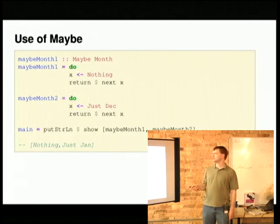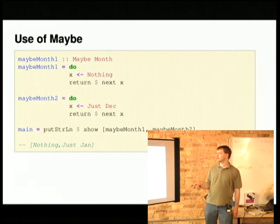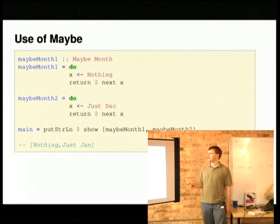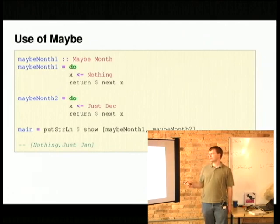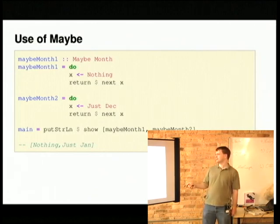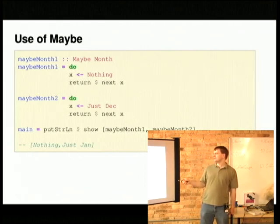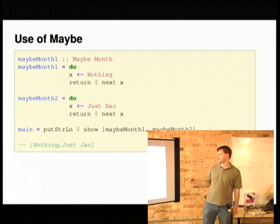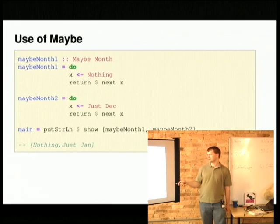So how this works, using that month type class I defined before. If I give it a nothing value and return the month that comes after nothing, then I get nothing in my output. Whereas if I say that my maybe month is just December, then I actually get just January.